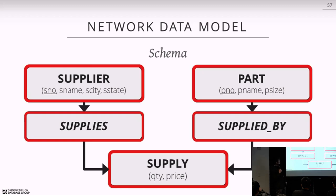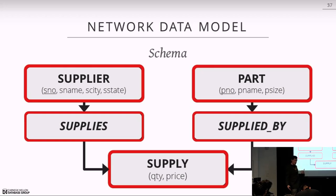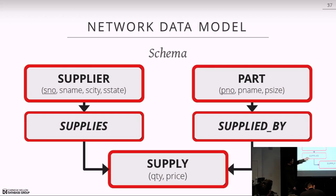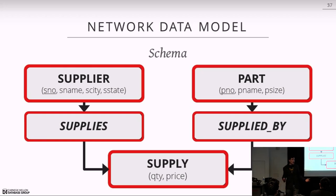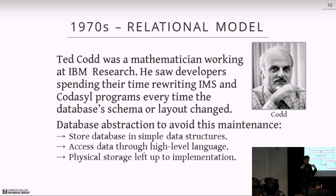The first problem with the network model is that you're writing complex queries for really simple operations. The second problem is that if the 'supplies' or 'supplied-by' sets get corrupted, both tables get corrupted because you have no way to link them back. And again, there's no independence of the logical schema from the physical representation.